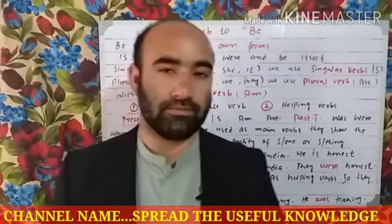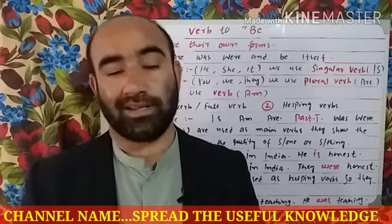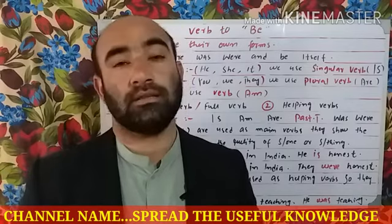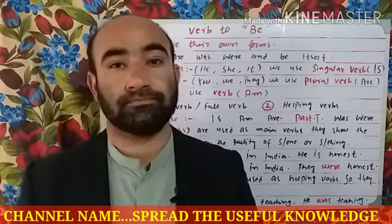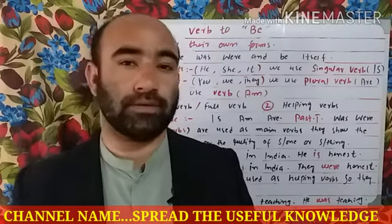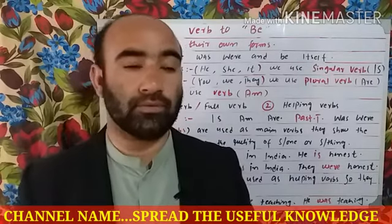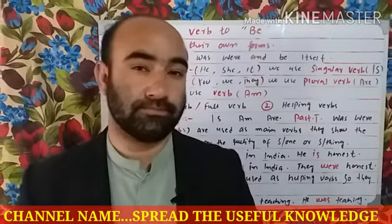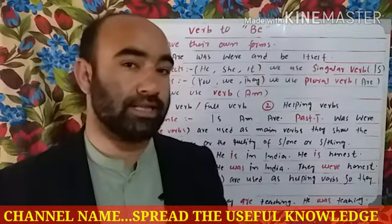In the previous class, I talked about the linking verbs. The linking verbs are those verbs which connect the words with one another. The main verbs and the helping verbs both connect the words with one another. Then I divided the helping verbs into two categories: the auxiliary verbs and the modal verbs. In the auxiliary verbs, there are three types: be verbs, do verbs, and have verbs. These are called the primary auxiliary verbs.